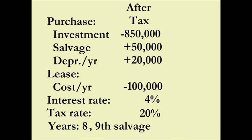Recapitulating: $850,000 goes out at the beginning; salvage value is $50,000 in the ninth year; depreciation savings of $20,000 come in years one through eight; the net cost of the lease is $100,000 going out periods zero through seven. We're using a discount rate of four percent — the after-tax rate of the five percent loan, which applies even to the lease because we're avoiding taking the loan.